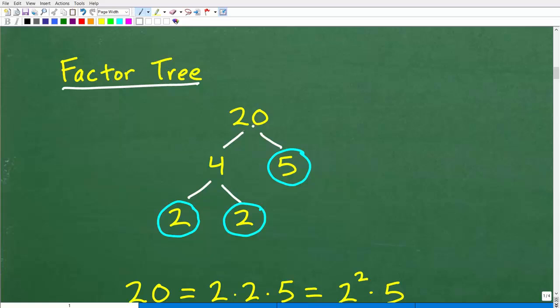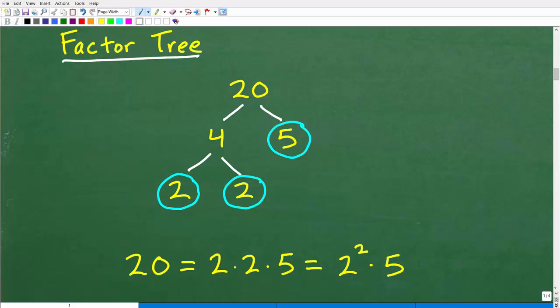I have an example of a factor tree right here. It looks kind of like branches of a tree. Let's find the prime factors of 20. You take your 20 and find two factors of 20. Here I have 4 times 5. You could go 2 times 10 as well. It doesn't make a difference what numbers you start with. Your final answer will be the same.